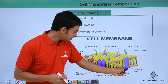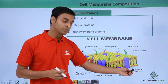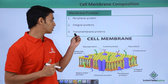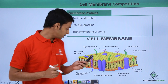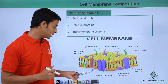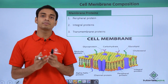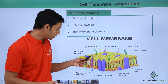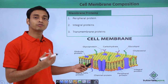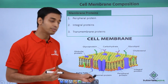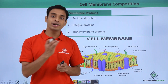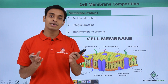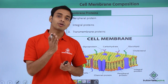The second type is the integral protein, which is embedded into the bilayer. The third type is the transmembrane protein — a very good example is the alpha helix protein. The transmembrane protein spans both the outer and inner layers. These proteins form channel proteins, which help in the movement of molecules from outside or inside the cellular membrane.